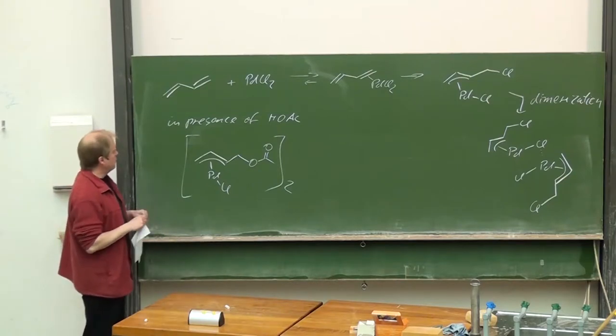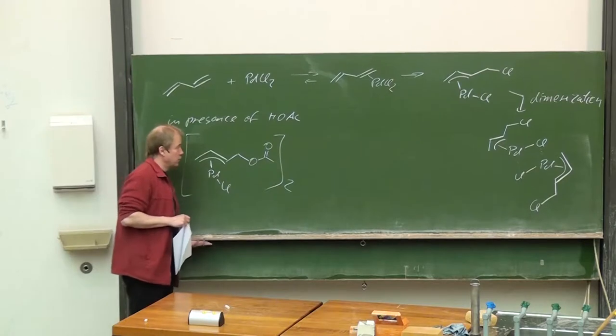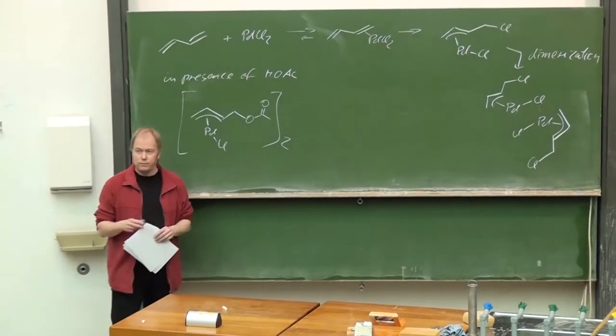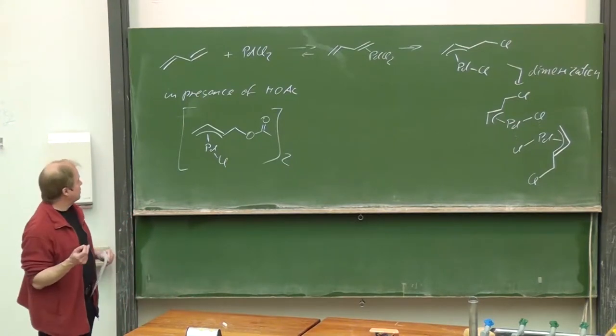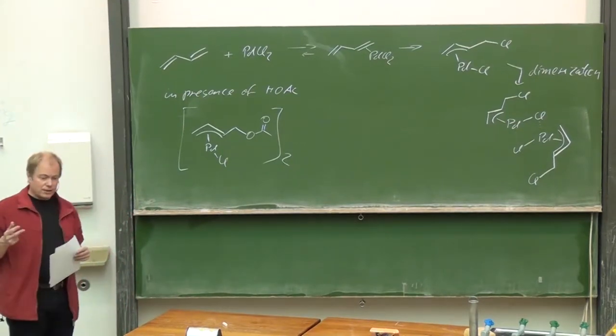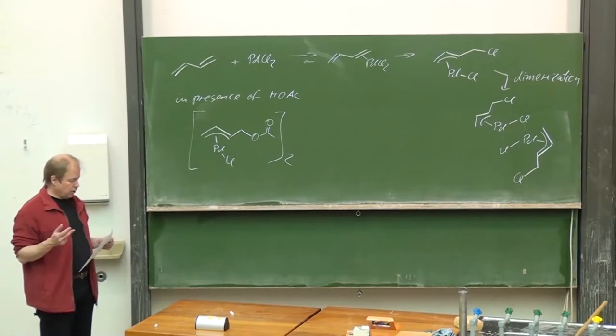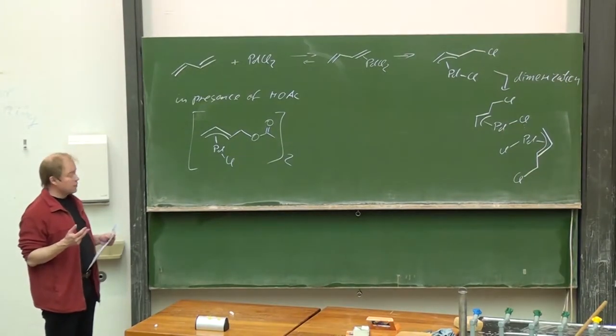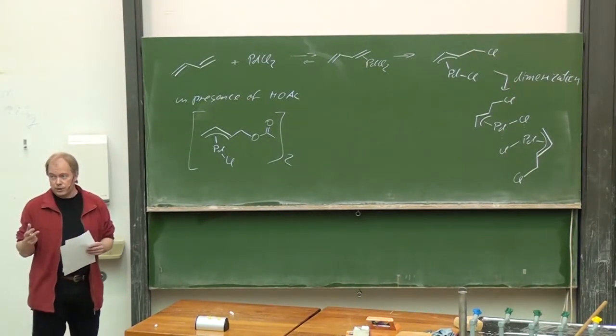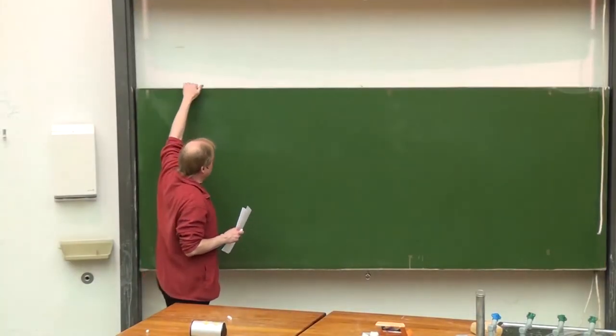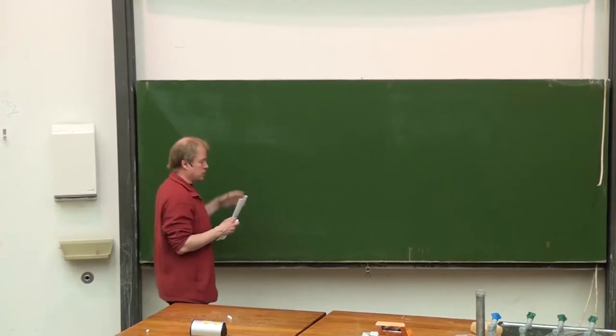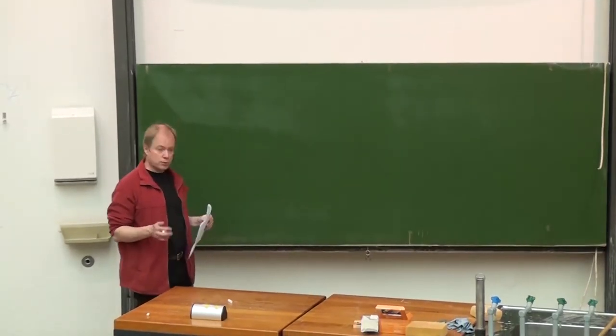In presence of acetic acid then the corresponding product with acetate functionality at the terminal CH2 group is isolated, of course also as a dimer. We can perform such a reaction catalytically but then we have to add an oxidizing agent and very often for these cases it's simply benzoquinone.